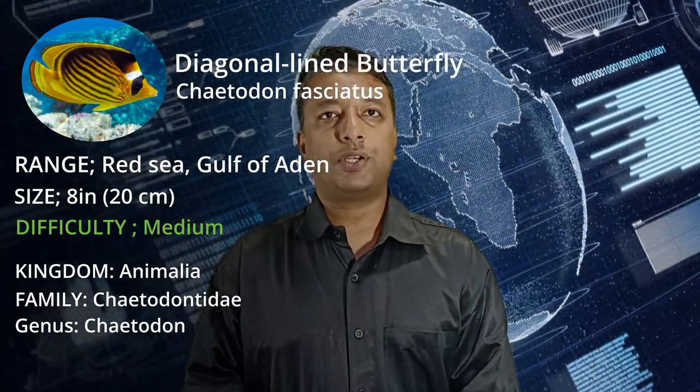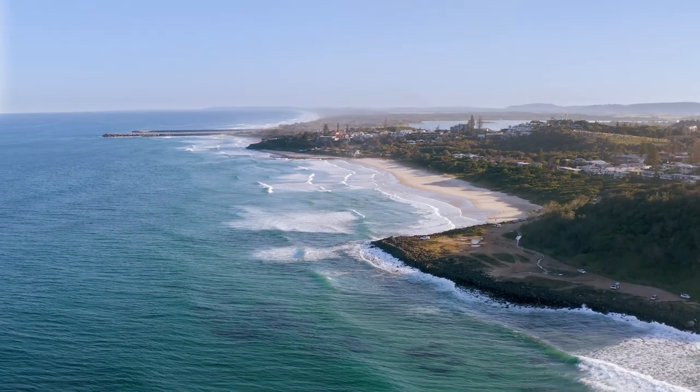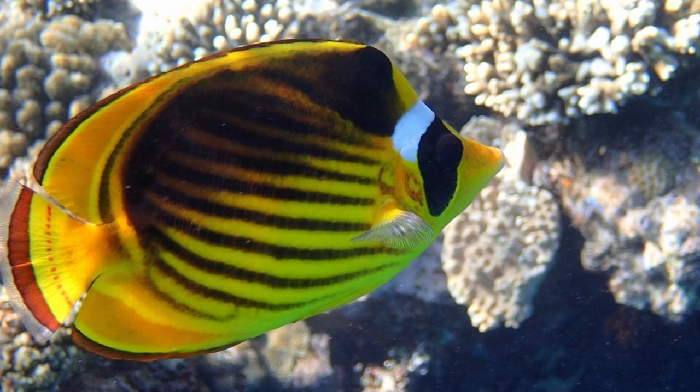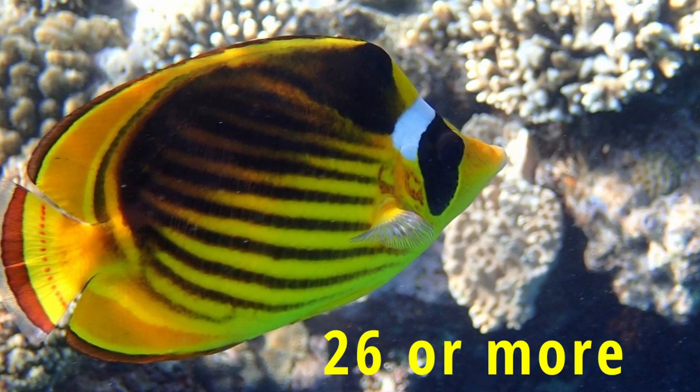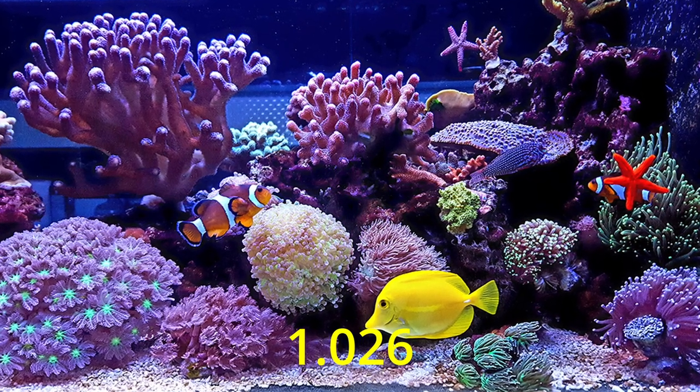This fish is a Red Sea area fish. Red Sea oriented fish are very high density. So for this fish, the density is very high. This fish is also very complex. It is very rarely imported and is very closely related to the Raccoon Butterfly — we can confuse it with the Raccoon. But this is the Diagonal Lined Butterfly, not a Raccoon Butterfly. It is Red Sea oriented, high density — in and around 1.026 — and the temperature is 26 degrees centigrade.